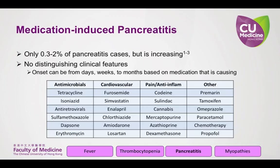In developed countries, obstruction of the common bile duct by stones (about 38%) and alcohol abuse (about 36%) are the most common causes of acute pancreatitis. Medications are a cause in only about one in every 100 cases; however, in HIV patients it can be the cause in up to 40% of cases. It is not important to memorize the table of class 1 or 2 pancreatitis-inducing agents, but rather to have the information readily available for reference. It is very difficult to differentiate medications as the cause of pancreatitis from other more common causes.